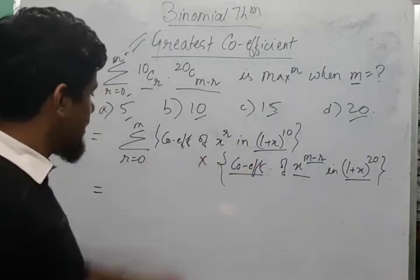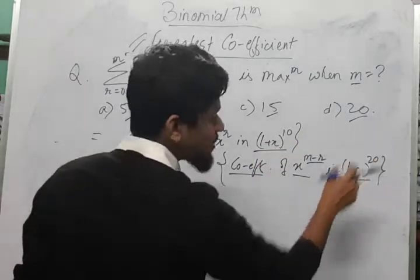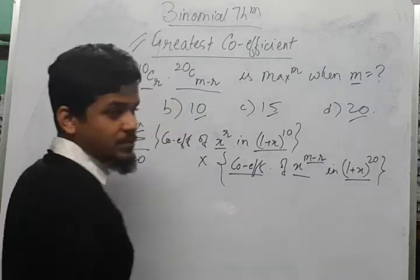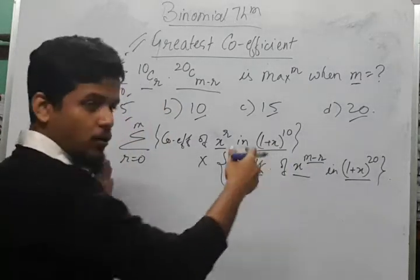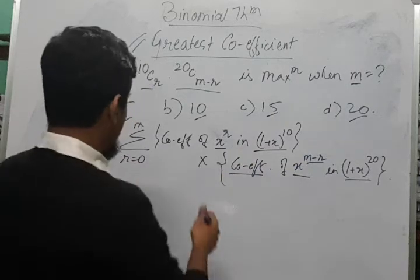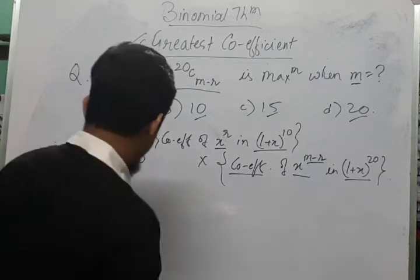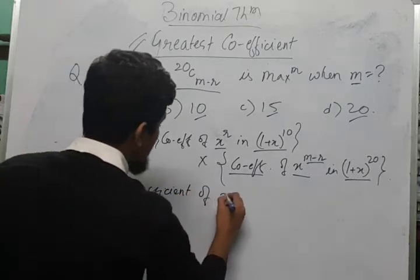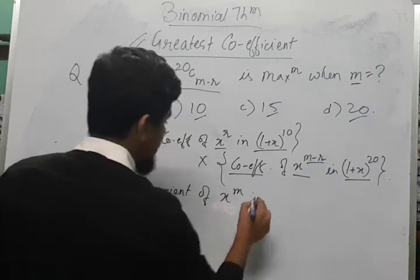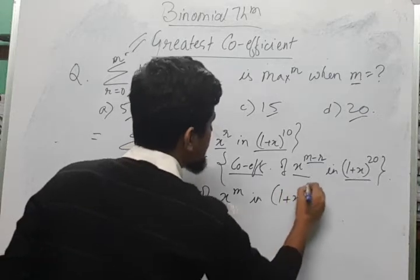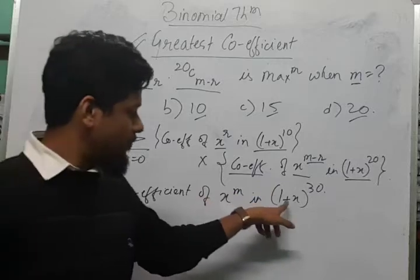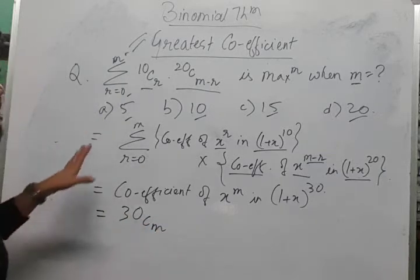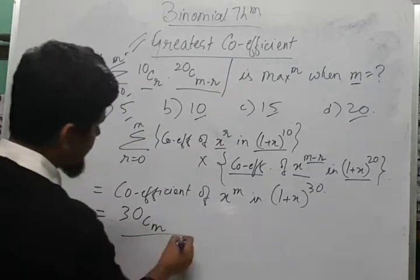So ultimately, if we multiply (1+x)^20 into (1+x)^10, we get (1+x)^30. And x^r into x^(m-r) gives us x^m. So if we keep on adding it up for individual r from 0 to m, we ultimately get that this is equal to the coefficient of x to the power m in (1+x)^30, which is nothing but 30Cm.